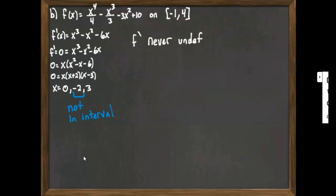So in this case, we're going to evaluate f now at our two endpoints, -1 and 4, and at the two critical values that are actually in the interval at 0 and at 3. So we plug in -1, and when we compute that, we get 7.583.